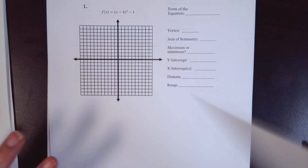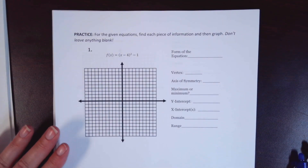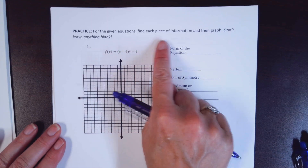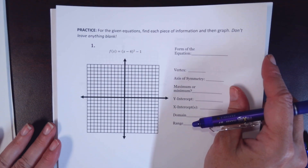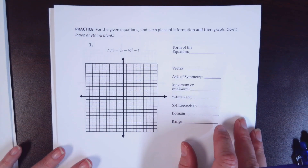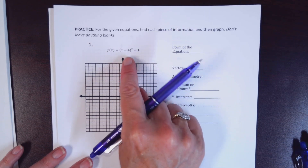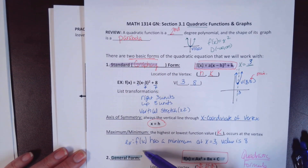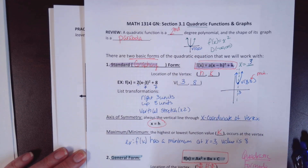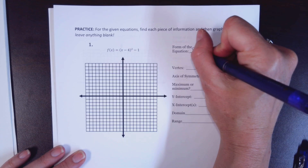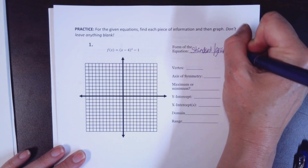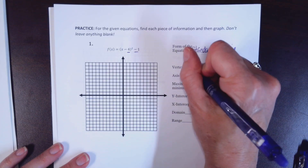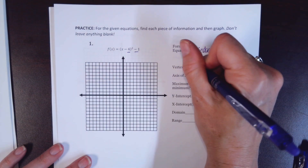Now we have five examples to work through. I want you to remember that you have control of this lecture — pause it if you need to rewind and make sure you understand everything. For each equation, identify the form first. If it's split apart with a squared expression inside, that's the standard or graphing form. When in graphing form, you immediately know your vertex — for example, the vertex is at (4, −1) and the axis of symmetry is x = 4.